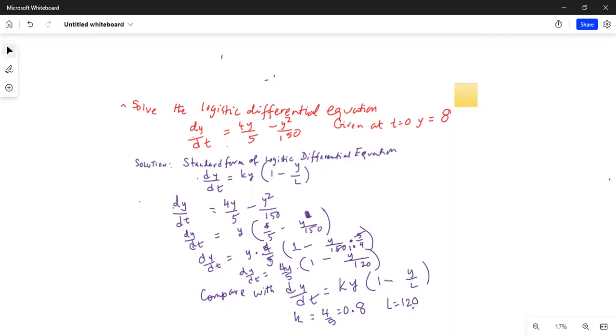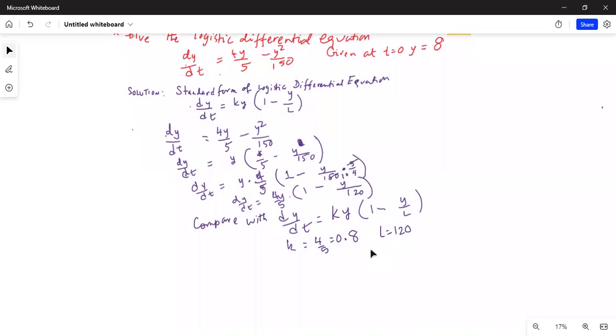So the solution for this logistic differential equation is of the form y is equal to L divided by 1 plus b e to the power of minus kt. Now we have been given the value of y at t is equal to 0. So we can write this as y(0), substituting t equal to 0, equals L divided by 1 plus b. Now at t is equal to 0, this is given equal to 8. L is also known as 120.